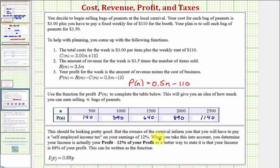Using the same procedure, we can find that P of 2,000 equals 890 and P of 2,500 equals 1,140. Now this looks pretty good, but the owners of the carnival inform you that you will have to pay a self-employed income tax on your earnings of 12%. When you take this into account, you determine your income is actually your profit minus 12% of your profit, or a better way to state this is that your income is 88% of your profit.